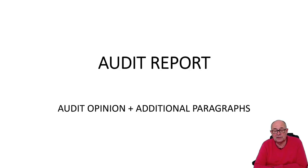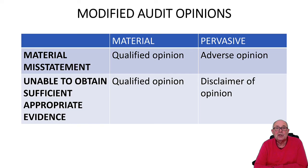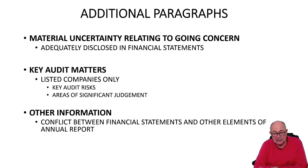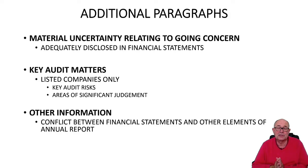Let's look back again just for a moment: audit opinion plus additional paragraphs. Audit opinion — unmodified versus modified; modified is the bad one. Two reasons for modification: you can't get the evidence, and material misstatement. And then the three key additional paragraphs: material uncertainty relating to going concern, perhaps post-pandemic; key audit matters for listed companies only; and other information — a disagreement between the financial statements and the rest of the annual report. That's it for our recap of the audit report.